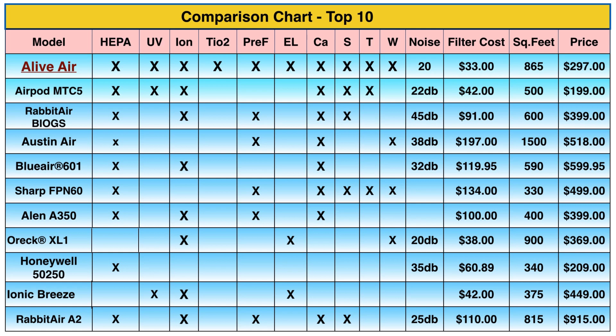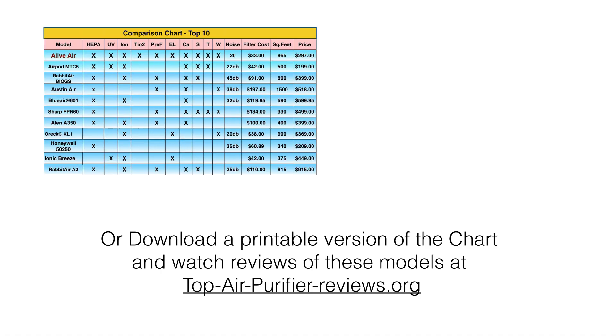Back to the chart — you can look across each model and see which technologies they include. The noise factor: anything 20 to 25 decibels is going to be quiet for sleep if you run it in the bedroom. You also have filter costs, square footage to get the right size unit, and the price factor. For a downloadable, printable version of this chart and video reviews of these models, go to topairpurifierreviews.org.